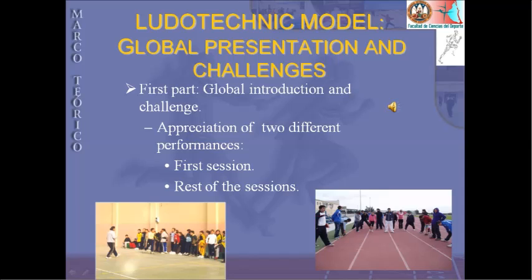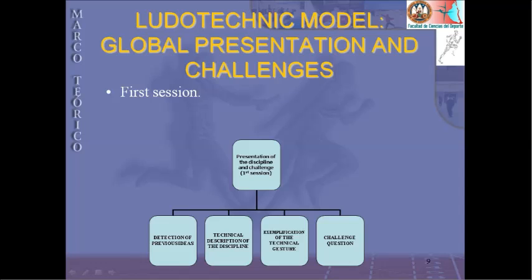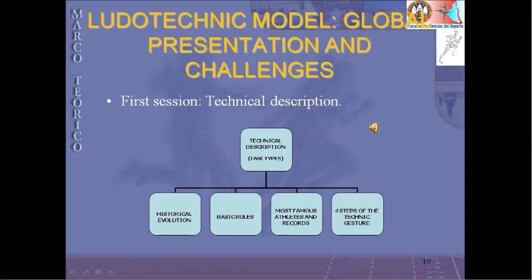As I have said before, this model has four parts. The first one is about the global introduction and challenge. Here, there is a distinction between two different performances: the first session and the rest of the sessions. The first session covers the technical description, task types, historical evolution, basic rules, most famous athletes and records, and the four steps of the technical gesture.